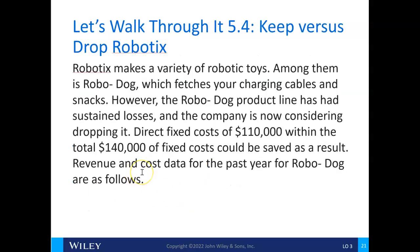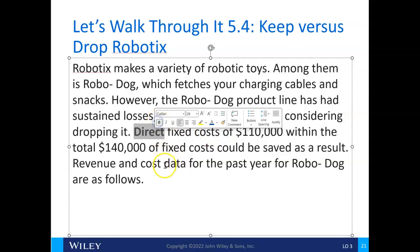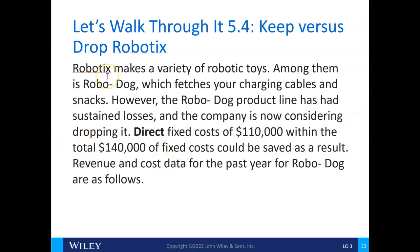The company makes robotic toys, including RoboDog, which fetches charging cables and snacks. However, it has sustained losses and the company is considering dropping it. Direct fixed costs — meaning costs directly tied to this product — total $110,000 within the total $140,000 and could be saved. In other words, they're avoidable. That $110,000 will go away, but $30,000 will remain. Revenue and cost data are provided below.